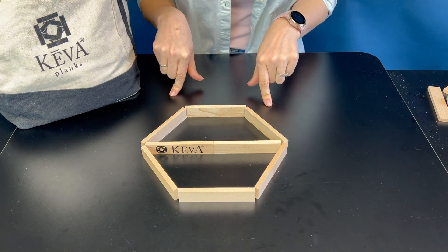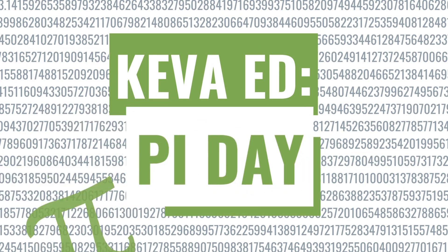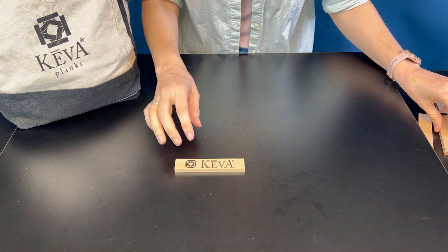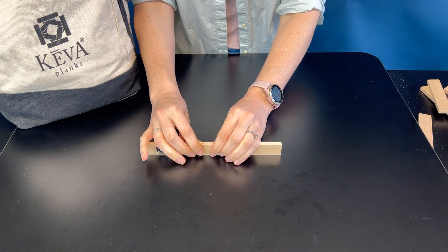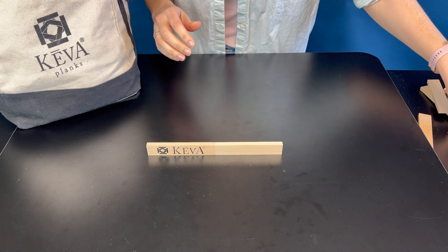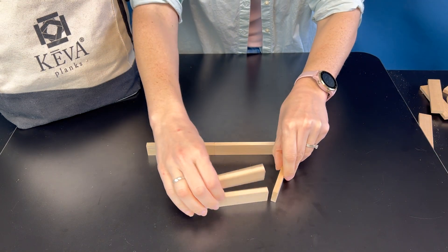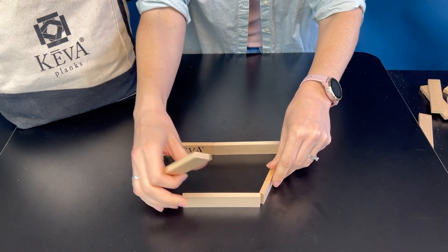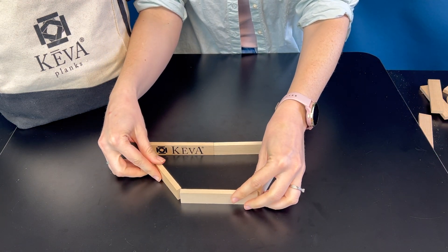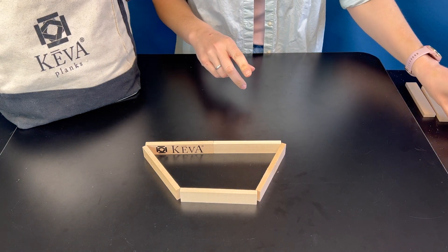Let's learn about pi. Take two KEVA planks and line them up next to each other. Then take three more and connect those two planks like this. To complete the circle, add three more.